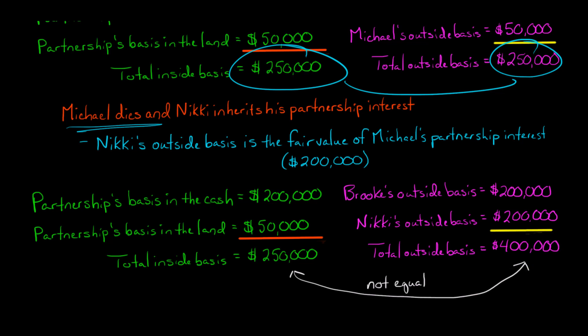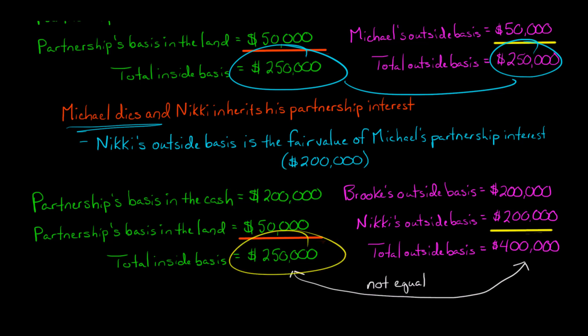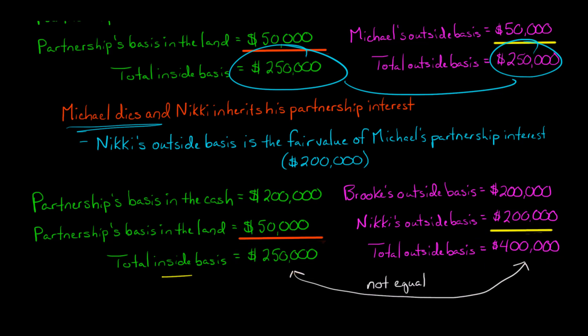However, the inside basis of the partnership has not changed. We still have the cash at $200,000 and the land at $50,000, so the total inside basis for the partnership is $250,000. And the total outside basis is $400,000. So we have a situation where the inside basis and the outside basis are not equal to each other.